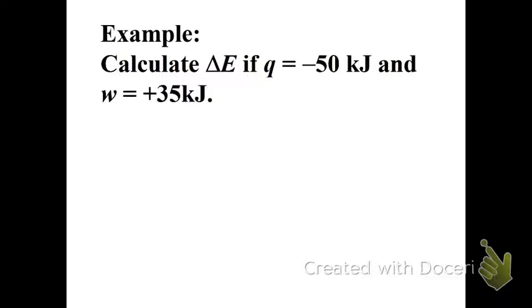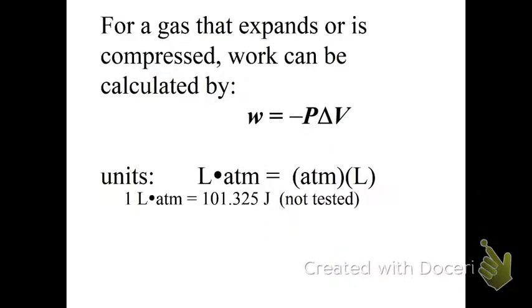Example. Calculate delta E if Q is equal to negative 50 kilojoules and work is equal to plus 35 kilojoules. You do it. I'm going to pause. Okay, what should that look like? It should look like this. There's our equation. Negative 50 plus 35 equals negative 15 kilojoules.